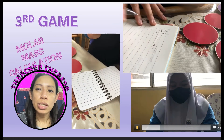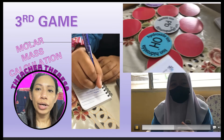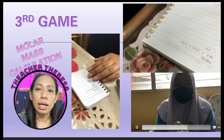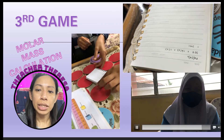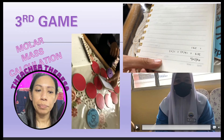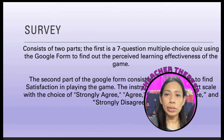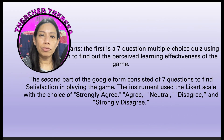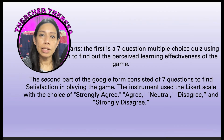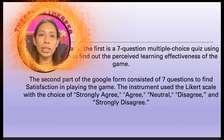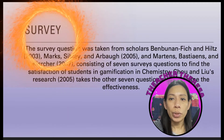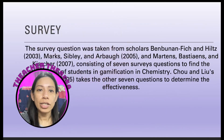The students with the most correct calculated ionic formulas will win the game, after which they will answer survey questions related to the perceived learning effectiveness of the game. The seventh question will be on the satisfaction of using the game. Both survey questions are adopted instruments.